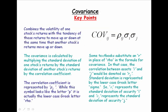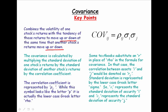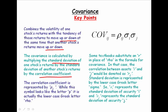Let's review the key points of covariance. Covariance combines the volatility of one stock's returns with the tendency of those returns to be up or down at the same time another stock's returns are up or down. We calculate covariance by multiplying the standard deviation of each stock's returns by each other times the correlation of the returns. The correlation coefficient is represented by the Greek symbol rho — it actually looks like a P, but it's not.